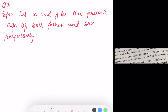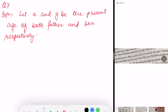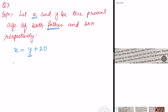The present age of the father exceeds that of his son by 20 years. x is for the father, so x equals y plus 20. Rearranging, x minus y is equal to 20. This is equation number one.